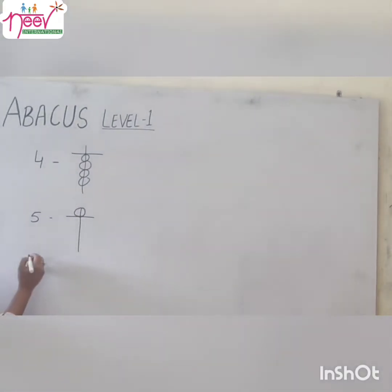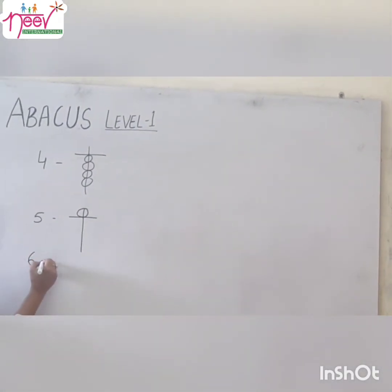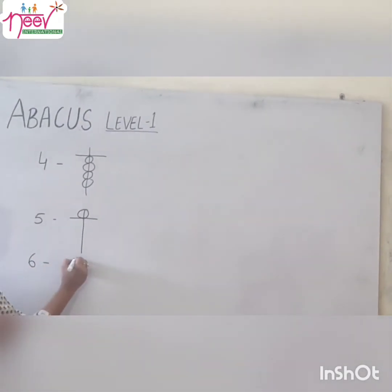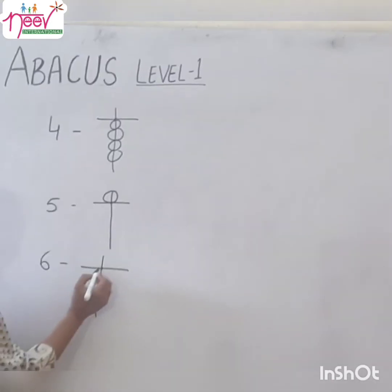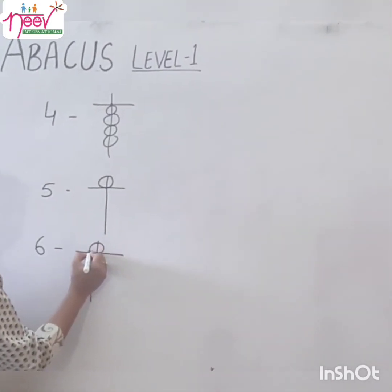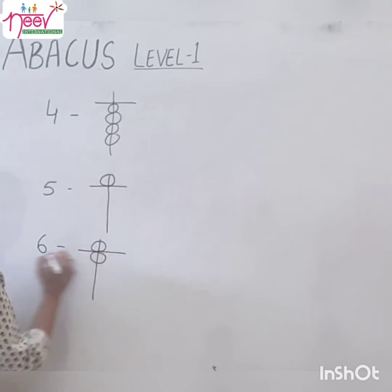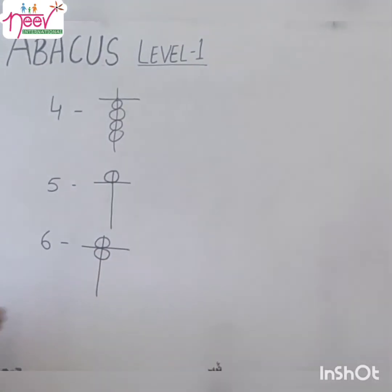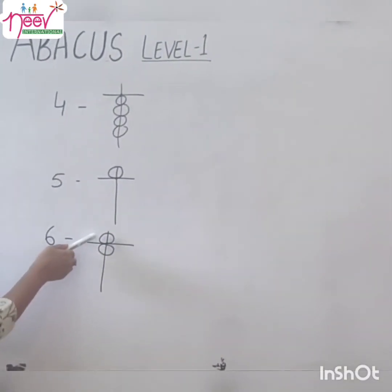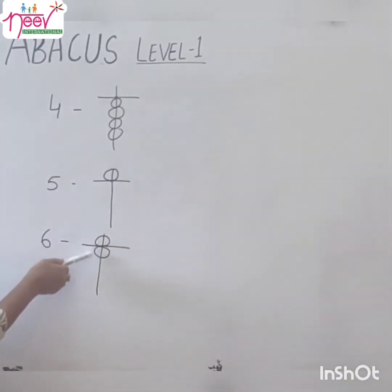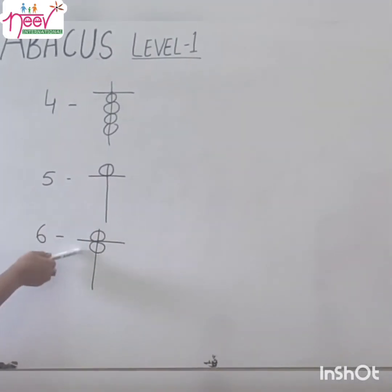Now let's see how to make 6. First make 5 and 1 — that is 6. This is our 5 plus 1, which equals 6. This is our 6.